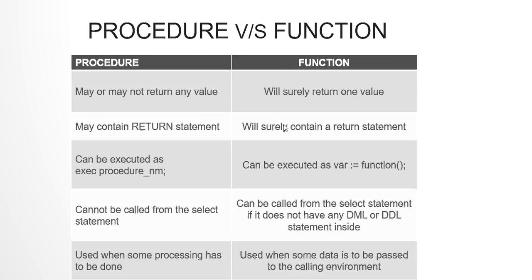A procedure is executed using the EXECUTE keyword followed by the procedure name and any parameters. But to execute a function, you need a variable to cache what the function returns. If the function returns a number, you need a variable of that data type, which gets assigned the output of the function.